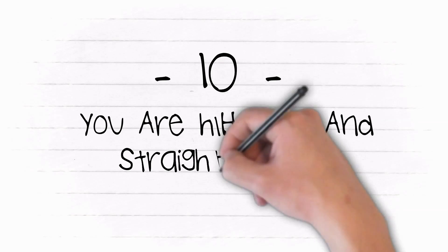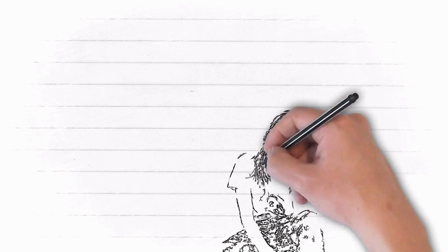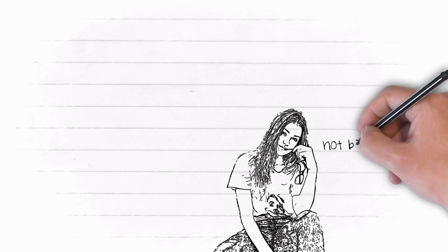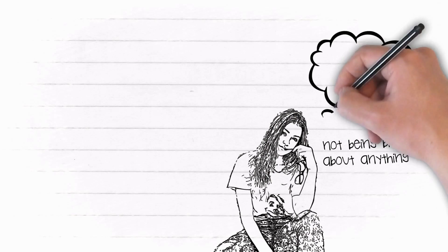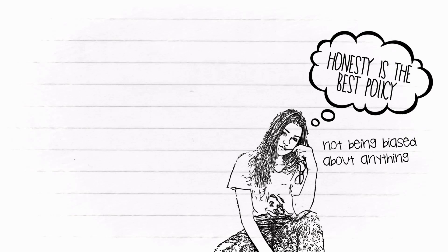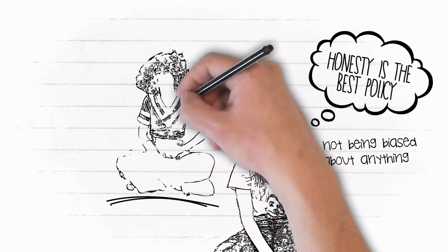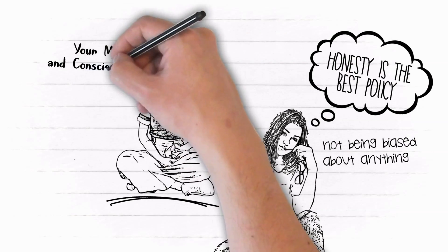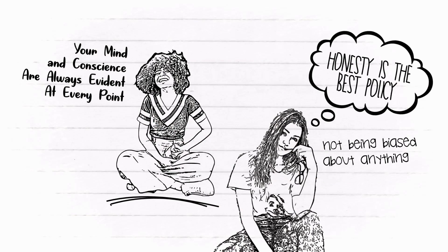10. You are honest and straightforward. You live your life outside lies. Say things the way they are, and not being biased about anything. You believe in the saying that honesty is the best policy. When you live your life in truth, you are not afraid of anything because your mind and consciousness are always evident at every point.